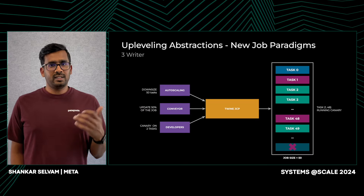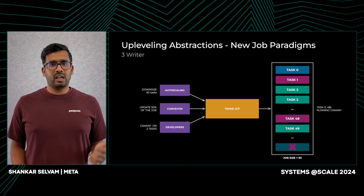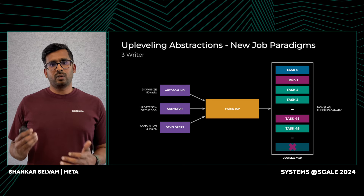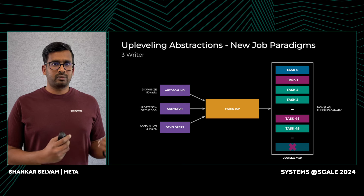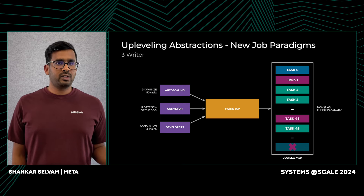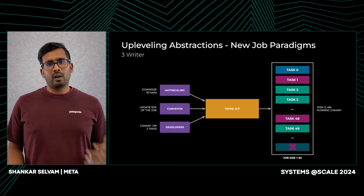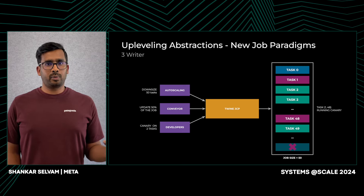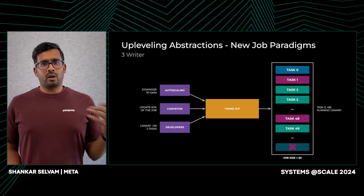We can see how Twine JCP, being aware of these different intents, is able to reconcile conflicts and provide a very smooth and cohesive experience for both developers and automation systems. We saw broad improvements in automation reliability when integrating on top of Twine JCP, and we also saw many implicit contracts that were previously developed outside of Twine getting eliminated.